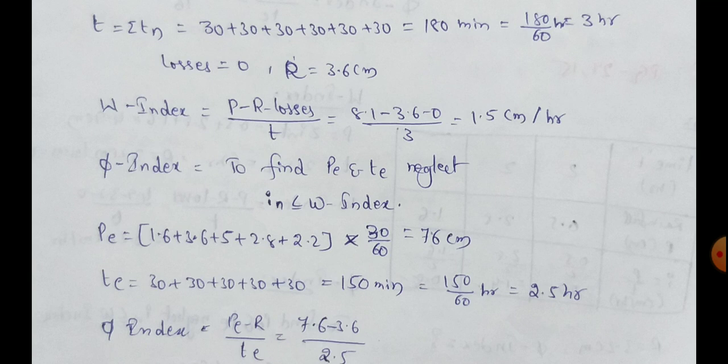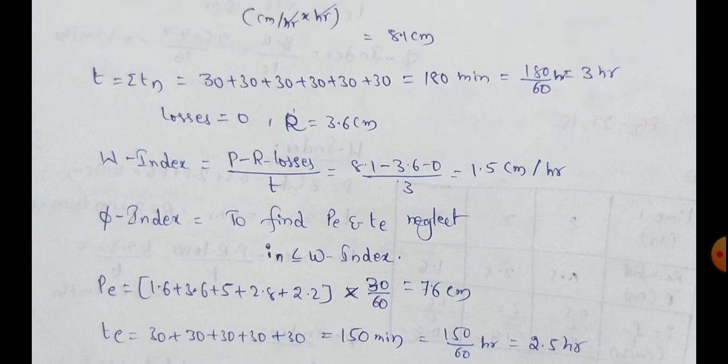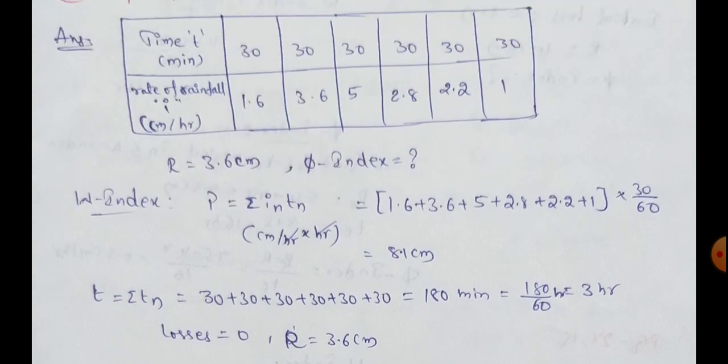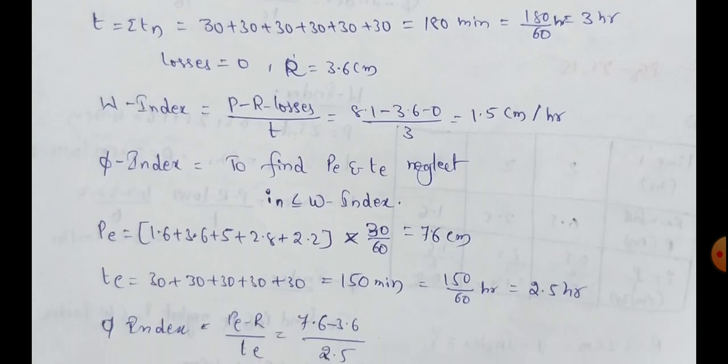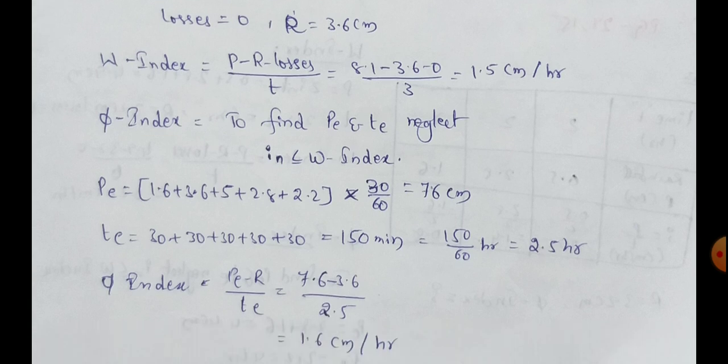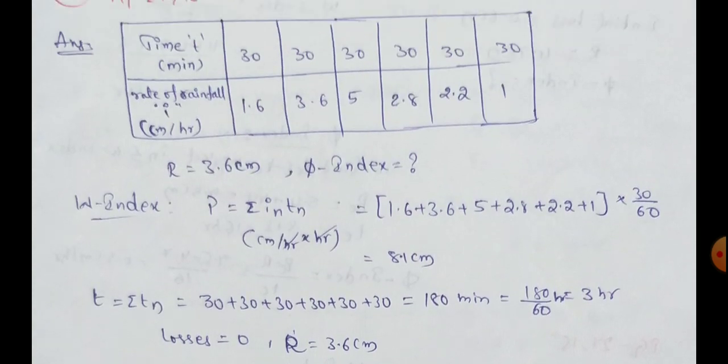Here, P value. We have 1.5 cm per hour. Here, intensity of rainfall is 1.5 cm per hour. We have to neglect that intensity of rainfall. Here, we have 1.6 plus 3.6 plus 5, 2.8 plus 2.2. Takes 30 minutes per hour. Total, 7.6 cm. Te is 2.5 hours.